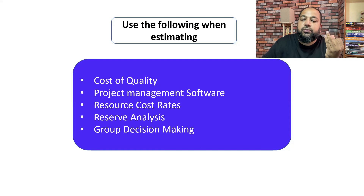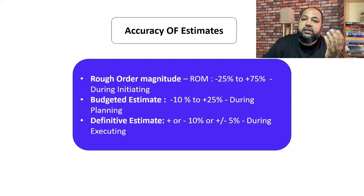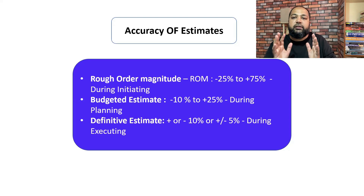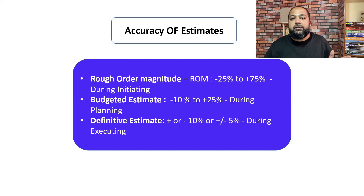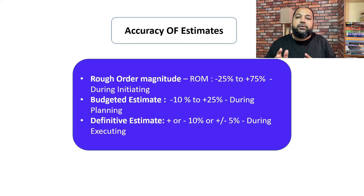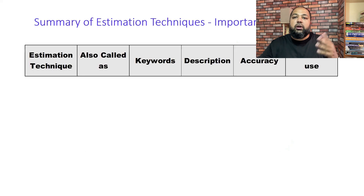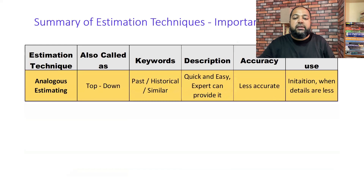Additional tools used when estimating costs include cost of quality, project management software for estimating resource cost rates, reserve analysis, and group decision-making. Regarding accuracy, there are three types of estimates: Rough Order of Magnitude (ROM) estimate with a range of -25% to +75%; budgeted estimate with a range of -10% to +25%; and definitive estimate with a range of -5% to +10%. ROM happens during the initiating phase, budgeted during planning, and definitive during execution. Bottom-up estimating is common for definitive estimates.